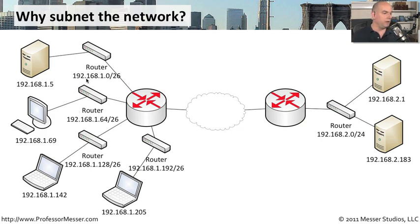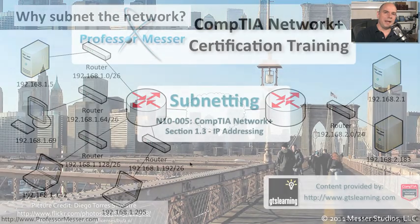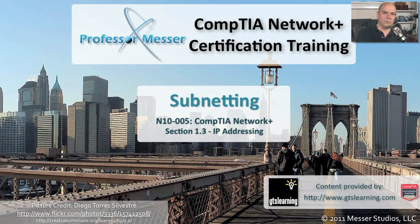So for this network we have 192.168.1.0/26, then 192.168.1.64/26, then 192.168.1.128/26, and 192.168.1.192/26. By taking those 26 bits of subnet and performing the same calculation over and over, we were able to create an entire series of four networks, all separated out with exactly the right number of hosts per network.